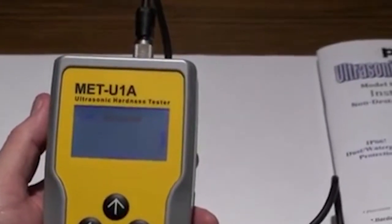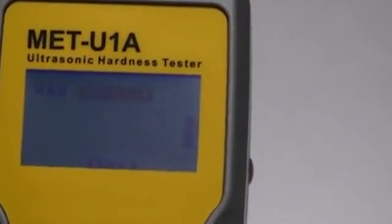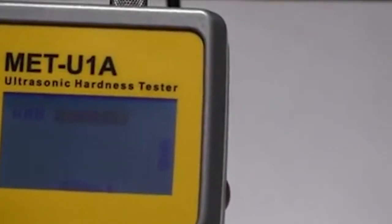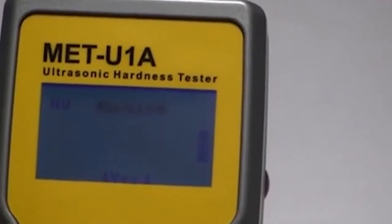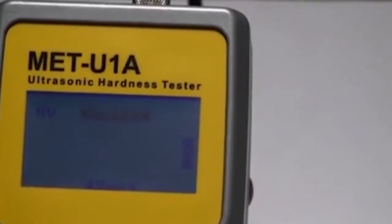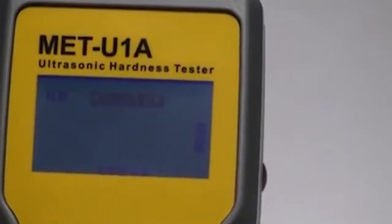If you press the right arrow button, you'll scroll through to HRB. This is used for aluminum. HV, again, is used for steel. HB, which is Brinell, is also used for steel.